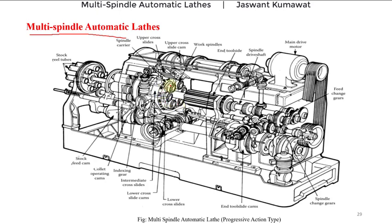Each of these spindles has one cross slide to perform operations like chamfering, cutting off, parting, thread rolling, etc. There are also cams mounted on a camshaft, and these cams are used to control the movement of the tools. Thus the diagram shown here is of multi spindle automatic lathes with fixed automation.